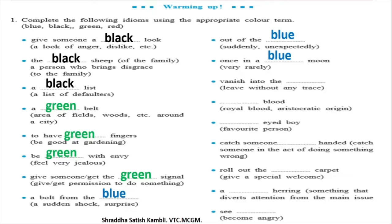'Vanish into the blue' means to leave without a trace — someone who just disappears. 'Blue blood' refers to someone from a royal family, a family of kings and queens. The word blue is used a lot in idioms in the English language. 'Blue-eyed boy' means your favorite person — that person might have black, brown, or green eyes, but if they are your favorite, you call them your blue-eyed boy.